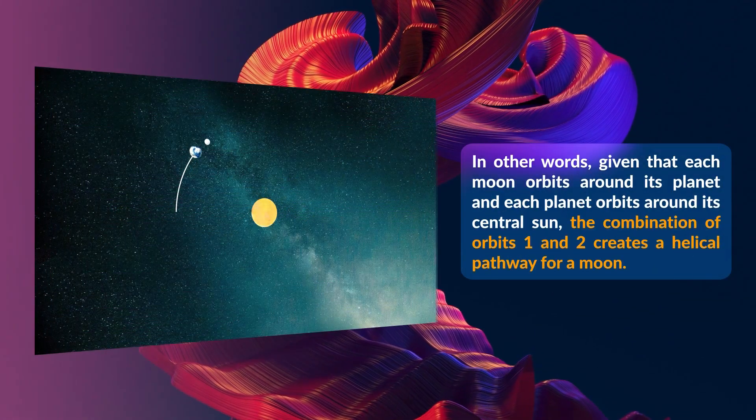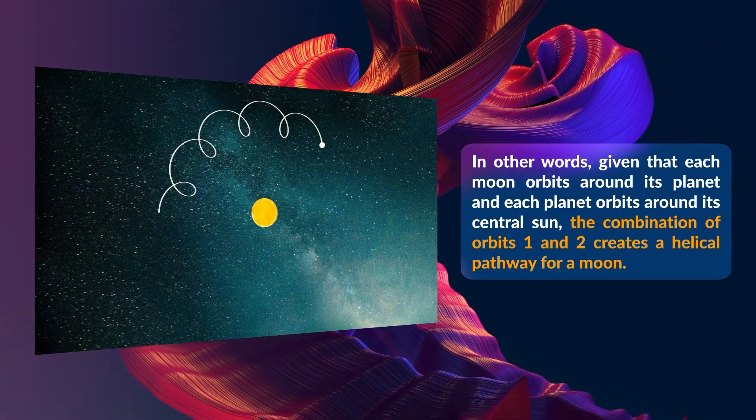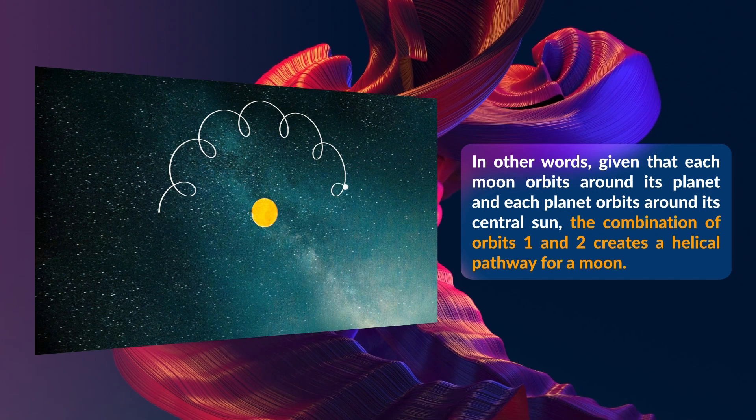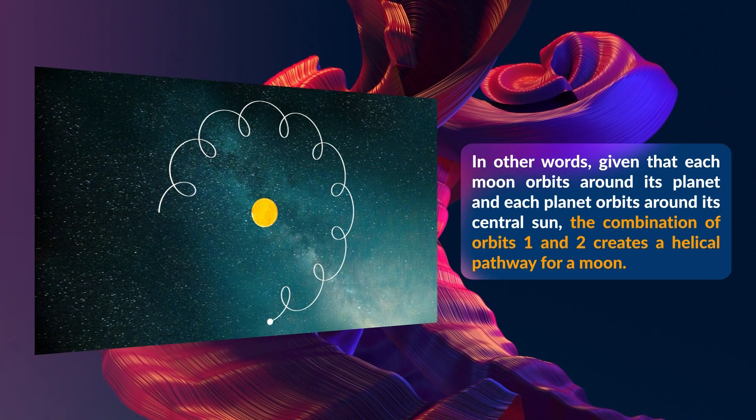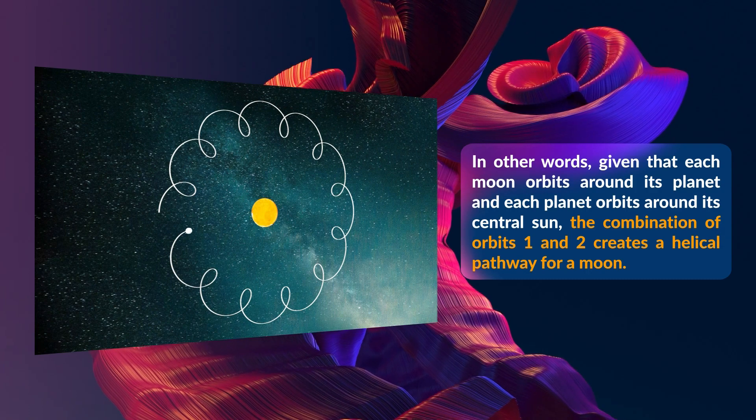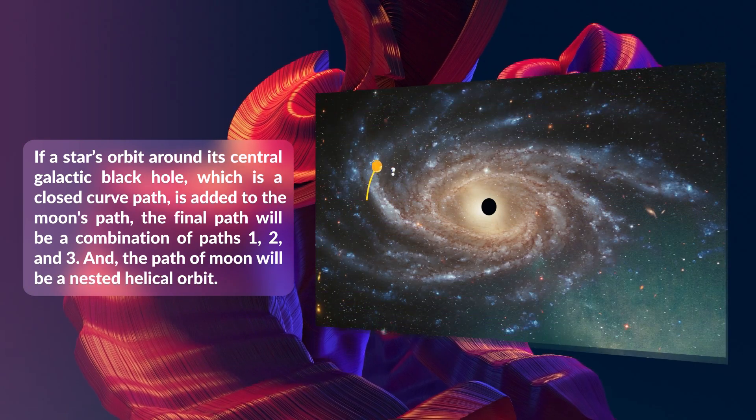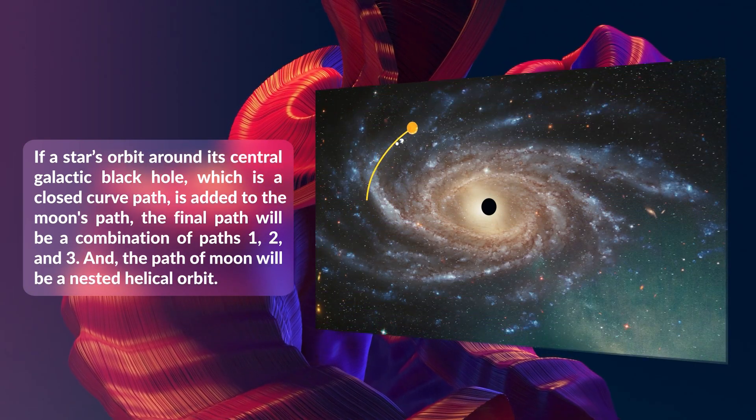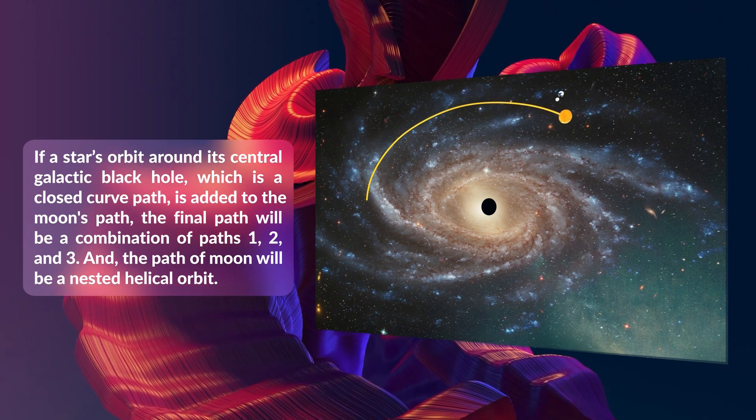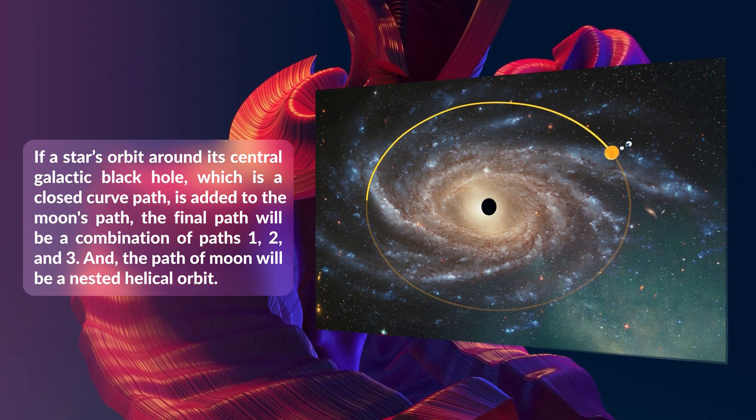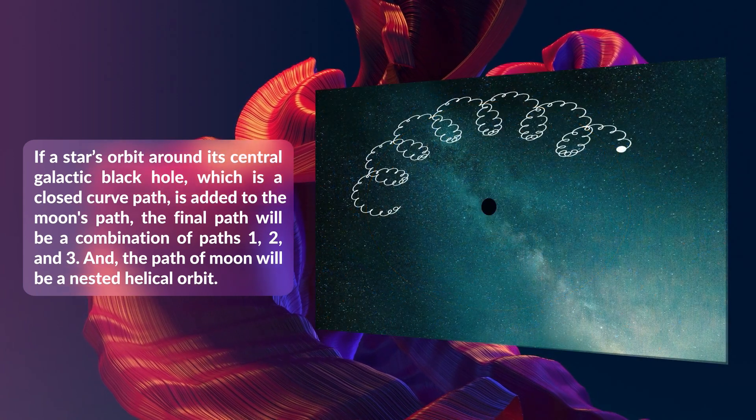In other words, given that each moon orbits around its planet and each planet orbits around its central sun, the combination of orbits 1 and 2 creates a helical pathway for a moon. If the star's orbit around its central galactic black hole is added to the moon's path, the final path will be a combination of paths 1, 2, and 3, and the path of the moon will be a nested helical orbit.